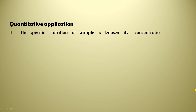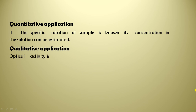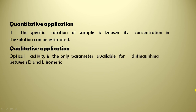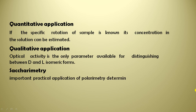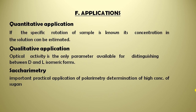Quantitative application: if the specific rotation of a sample is known, its concentration in solution can be estimated. Qualitative application: optical activity is one of the parameters available for distinguishing between dextro and levo isomeric forms of a substance. Polarimetry is also useful in saccharometry — an important practical application is the determination of high concentrations of sugar. This is all about optical activity, its instrumentation and applications. Thank you.